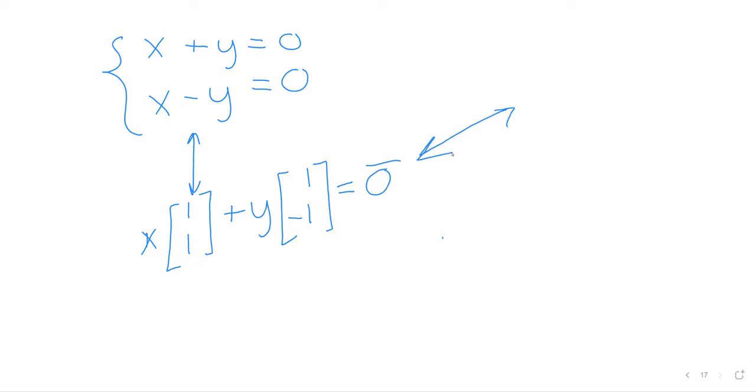And that's the same as having the matrix [1,1; 1,-1] times the vector (x,y) equals the zero vector.